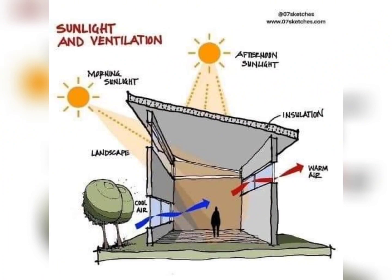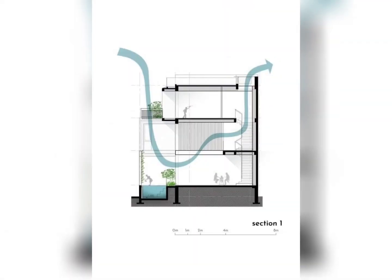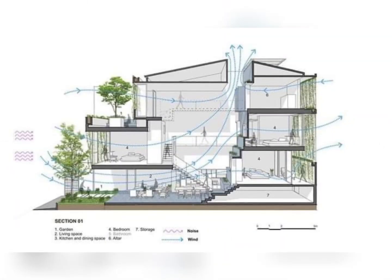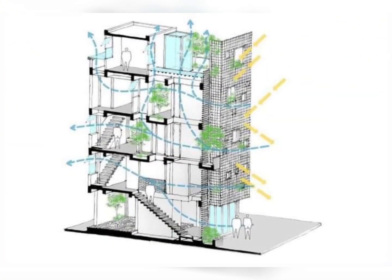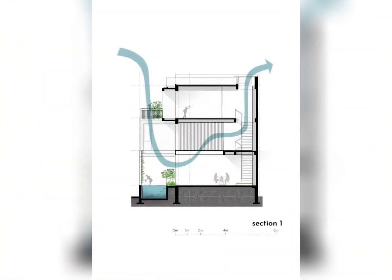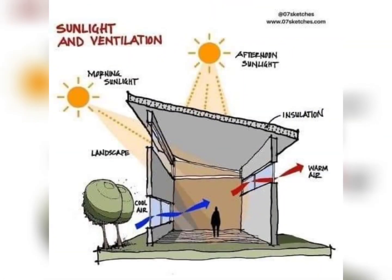Next is a stack ventilation system, a natural ventilation strategy using buoyancy and pressure differences to circulate air within a building. Warm air rises, creating a low-pressure zone that draws in cool air from lower openings. Warmer air escapes through upper openings, creating a continuous airflow. Building design optimizes this process for a comfortable and energy-efficient indoor environment.